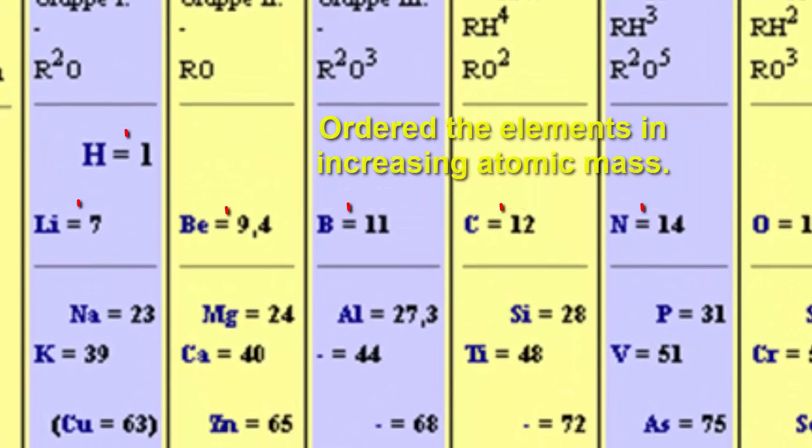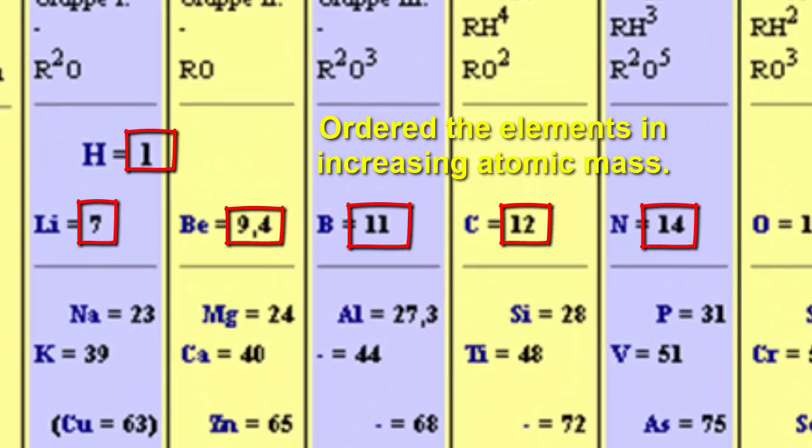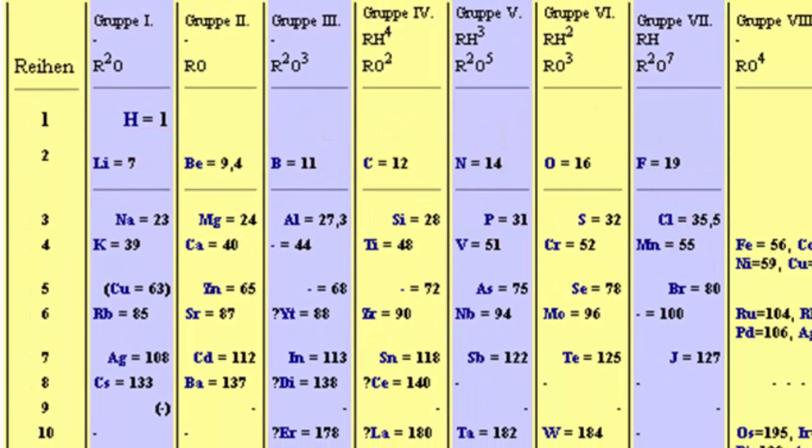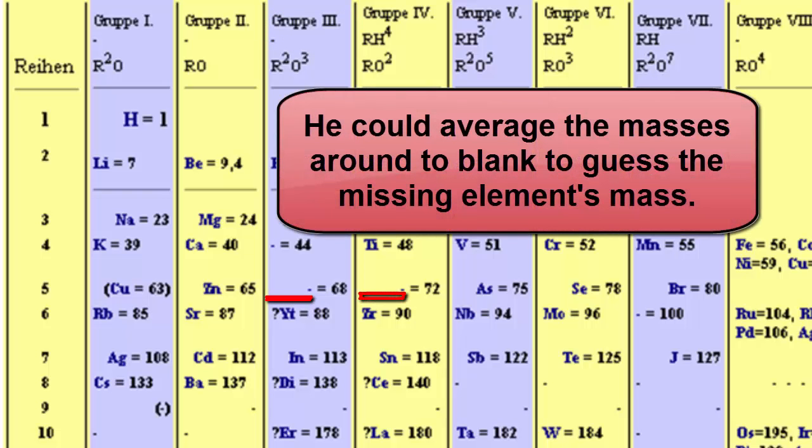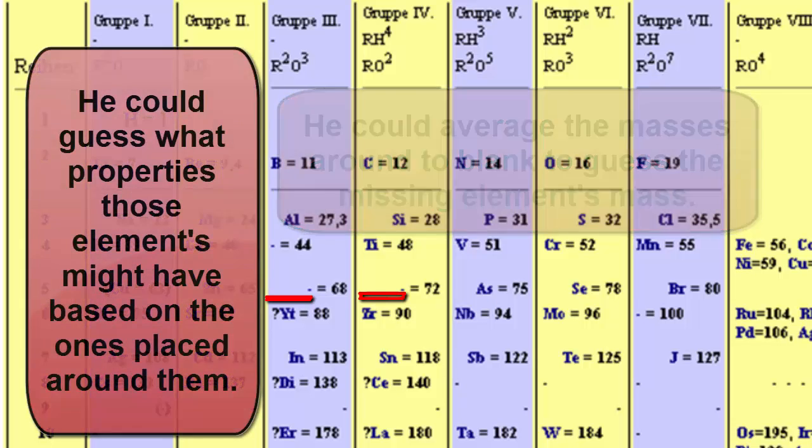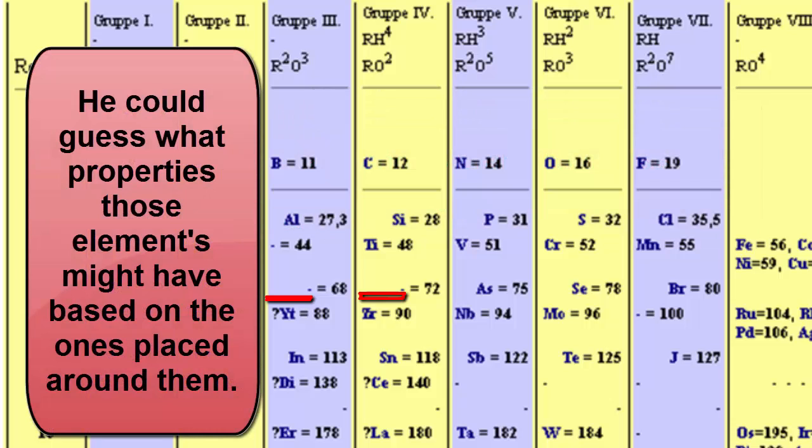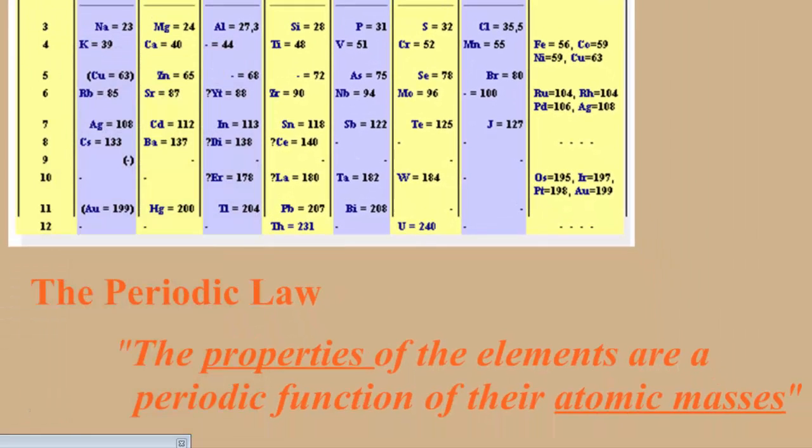He also, if you notice, put them in order of increasing atomic mass. And remember, the mass is the protons plus the neutrons. So he placed them in order of atomic mass. Now you see, for instance, right here in group three, that there's a blank. In group four, there's a blank. He knew what the mass must be, but there was a blank because they didn't discover that element. So he left it there, but he knew what properties he was looking for.